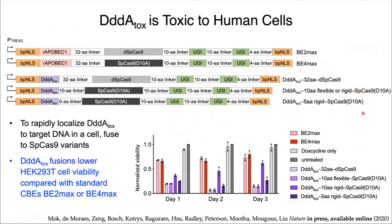One of our early studies was to first validate the activity of DddA in human cells. To do that, we fused DddA to a Cas9 protein to rapidly localize it to a target DNA within the nucleus of a cell. What we found was that these DddA fusions had lower cell viability compared to cells treated with the standard CRISPR-based CBEs. We predicted this was perhaps not surprising, given that the toxin's native function is used as an antibacterial warfare agent.